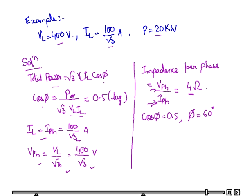As we know that cos phi is 0.5, phi becomes 60 degrees. R is Z times cos phi, where Z is impedance per phase, which is 4, and cos phi is 0.5, so the value is 2 ohms. And X is Z times sine phi, and the value is 3.46 ohms.